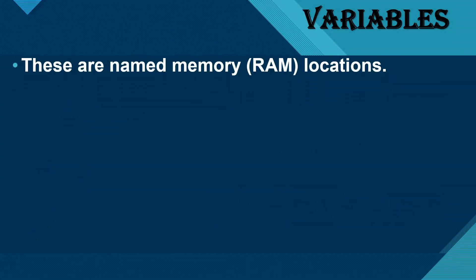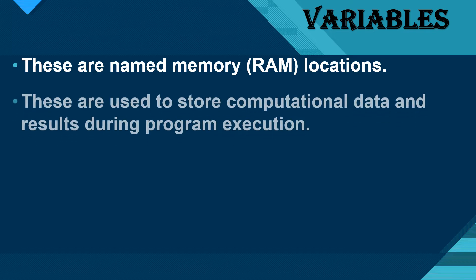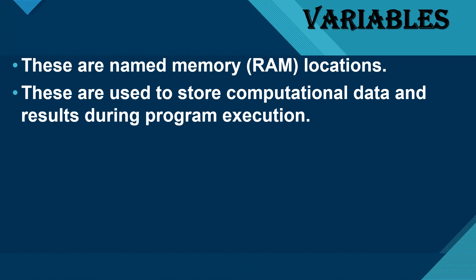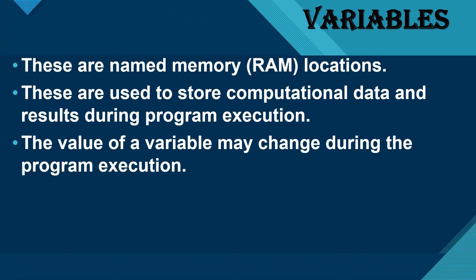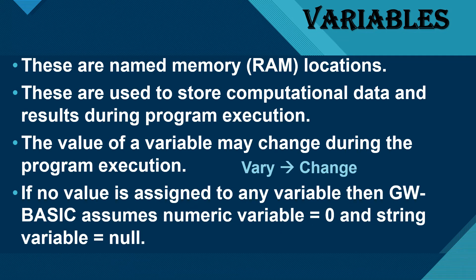Variables are named memory locations. You know that the memory is RAM, and you can assume the variable as containers or boxes which can store something. These are used to store computational data and results during program execution. The value of a variable may change during program execution, as 'vary' means to change. If no value is assigned to any variable, then GW-BASIC assumes that the numeric variable is equal to zero and the string variable is equal to null.